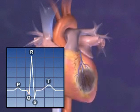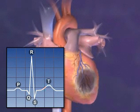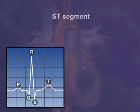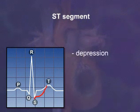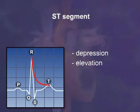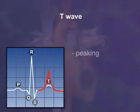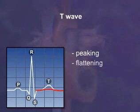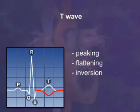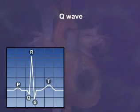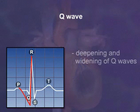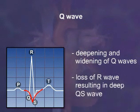ST segment depression and elevation. T wave peaking, flattening, and inversion. Q wave deepening and widening, as well as loss of R wave resulting in a deep QS wave.